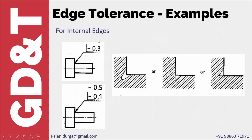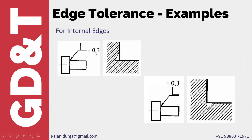Now let's discuss examples for internal edges. For an internal edge, if you see a minus sign, undercut is permissible. With 0.3 at the center, the undercut can be in both directions — positive vertical and horizontal — or only vertical, or only horizontal. In all three cases the size should not exceed 0.3. If two tolerance values are given, the minimum undercut is 0.1 and maximum is 0.5. The position of the minus value indicates direction: horizontal placement means horizontal undercut only, vertical placement means vertical undercut only.